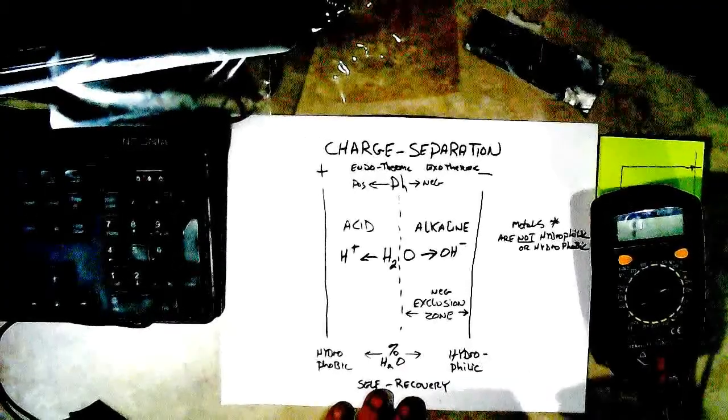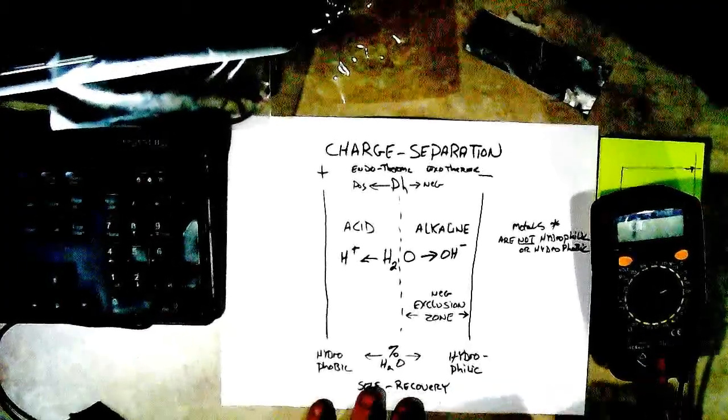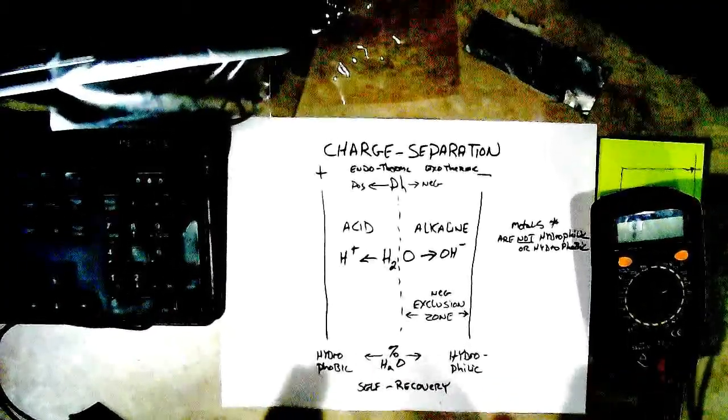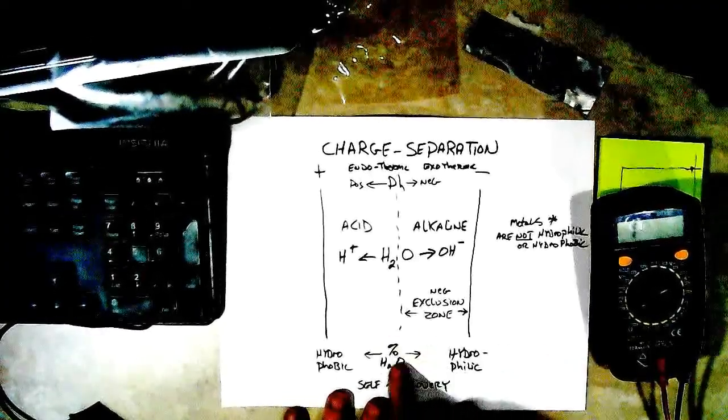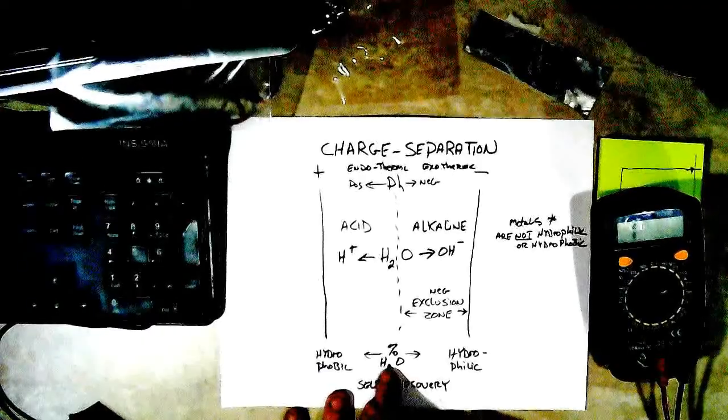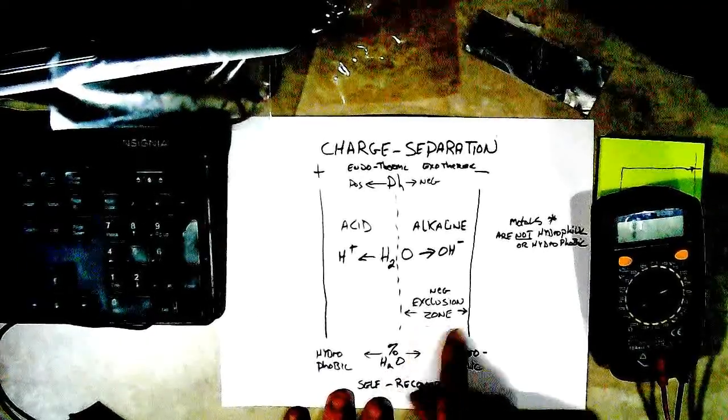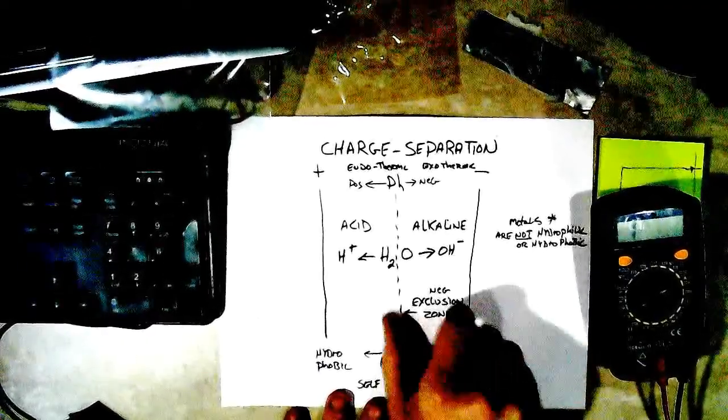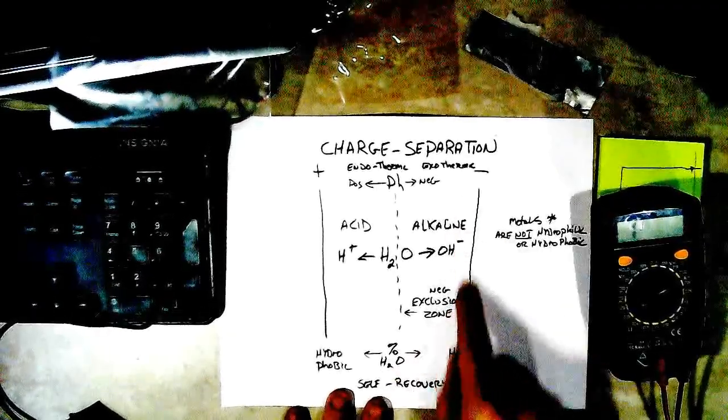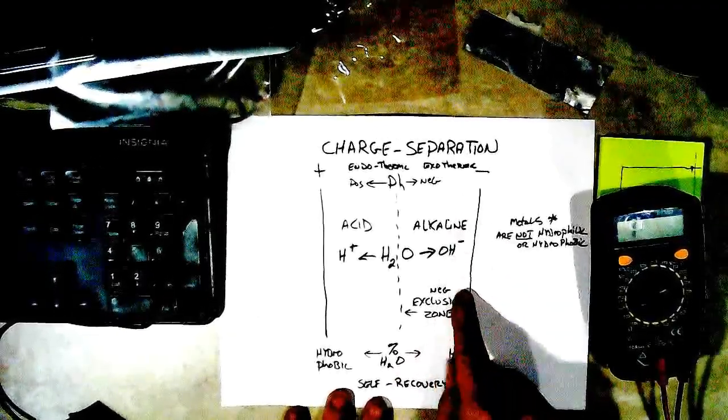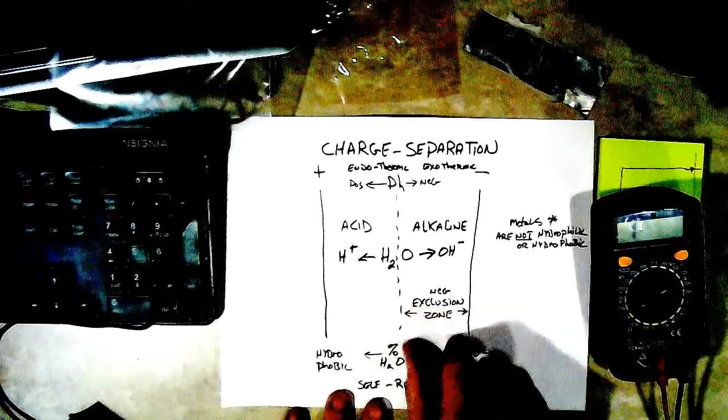Basically, that's what you're measuring when you're measuring your voltage, you're measuring how much charge separation you've got inside of there. Now, the percentage of water inside this exclusion zone determines how thick that exclusion zone is going to be. If you've just got a little bit of water, your exclusion zone is going to be very close over here. If you've got more water, your exclusion zone is going to be wider.